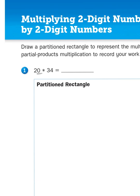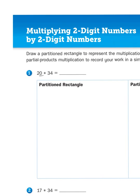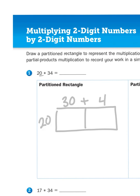So when I create a partition rectangle, it might look like this. I'm still going to take 34 and break it down into three 10s, 30, and four 1s, and I'm still going to multiply it by 20.